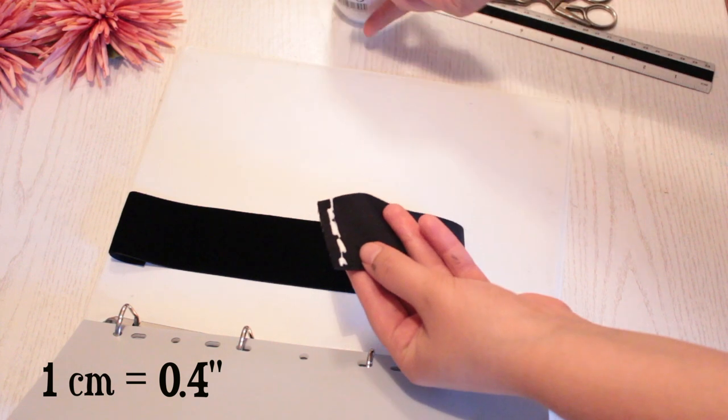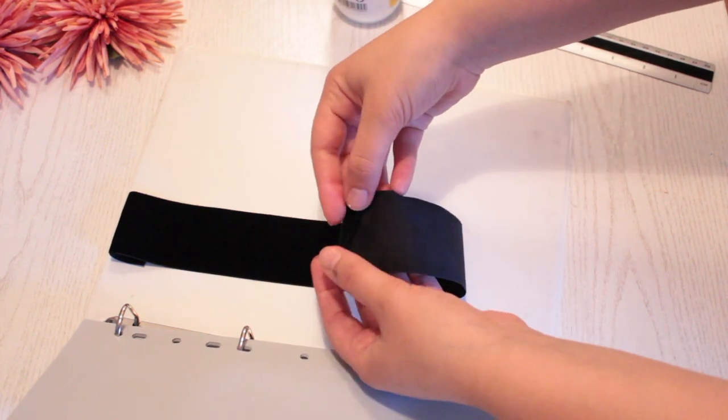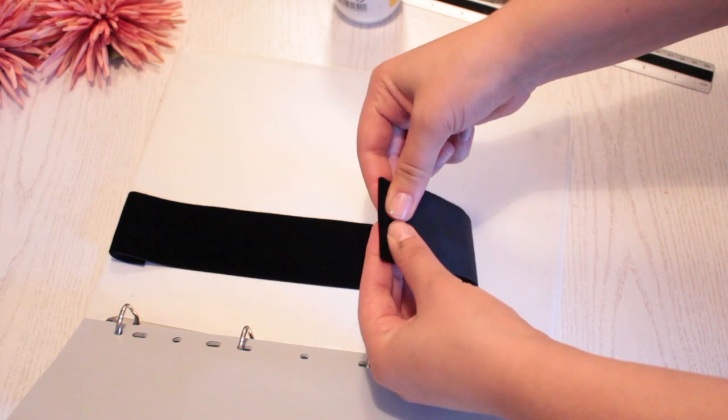Put some glue 1 centimeter from the bottom of the ribbon and fold it inwards. Then leave the whole thing to dry.